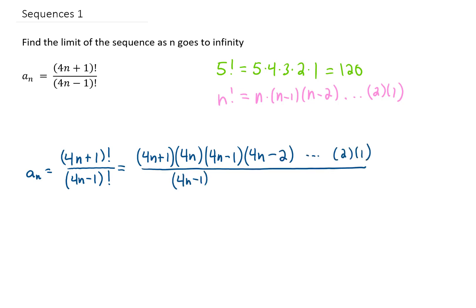You could do the same thing with the denominator. We start with the number 4n minus 1 and then we subtract 1 from that, and we keep doing that until we get down to the numbers 2 times 1.